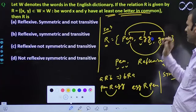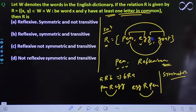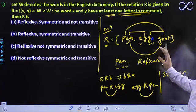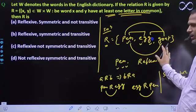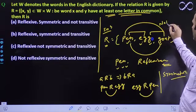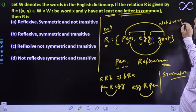We saw that these two have one letter common, these two have one letter common, but this and this have no letter common. 'Pain' and 'goat' have no letter common, so it is not transitive.